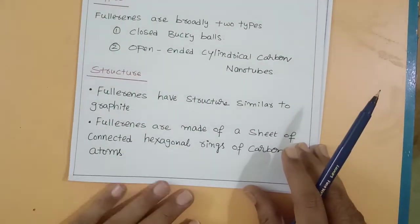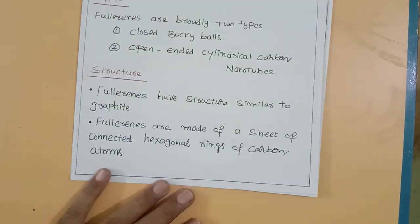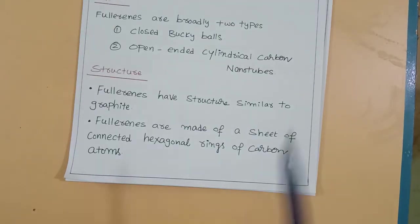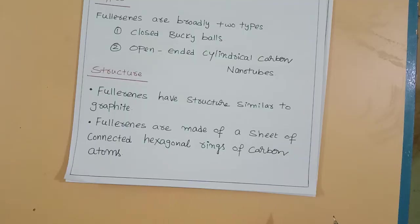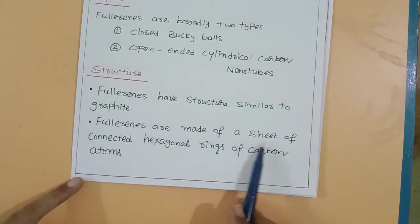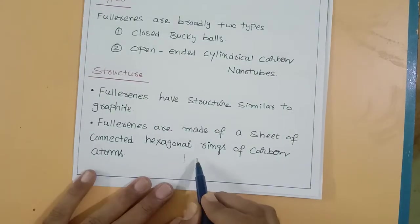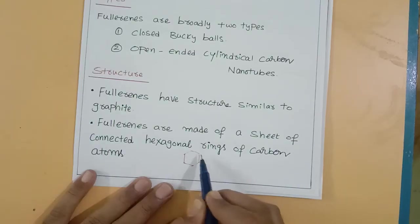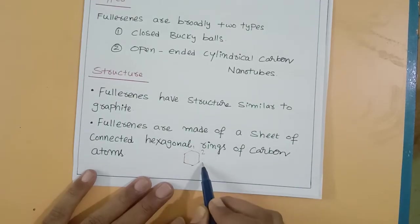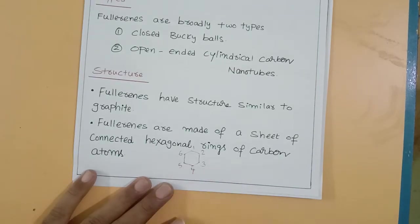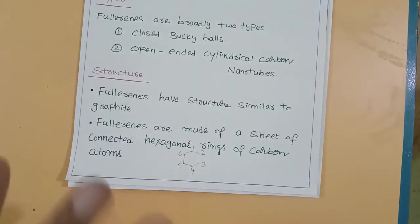Let us discuss the structure. Fullerenes have structure similar to graphite. Fullerenes are made up of a sheet of connected hexagonal rings of carbon atoms. This hexagon contains six atoms: one, two, three, four, five, six.